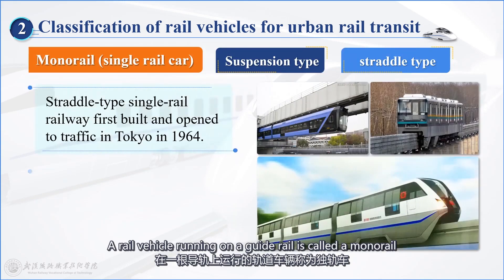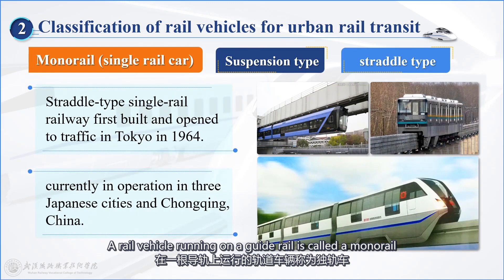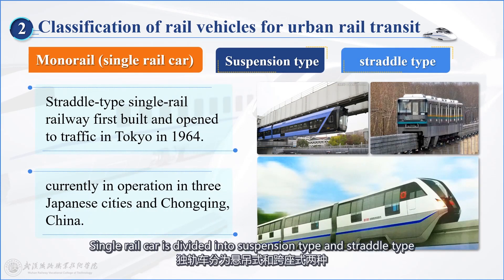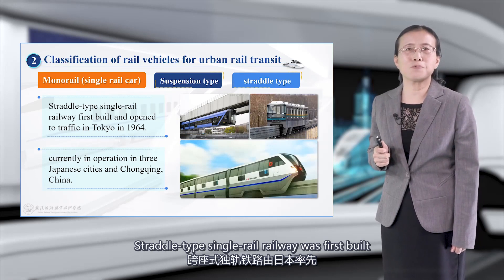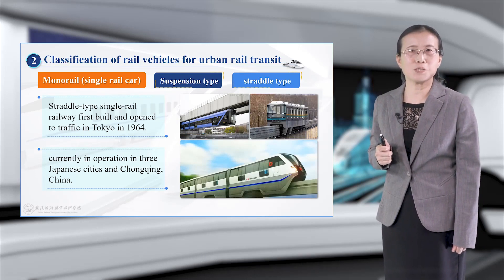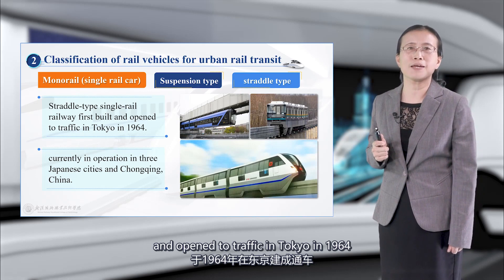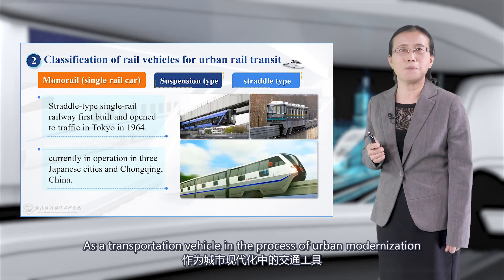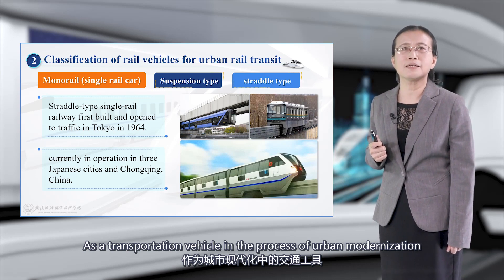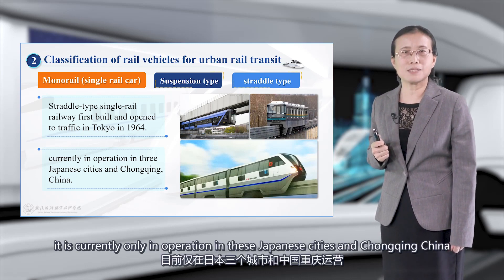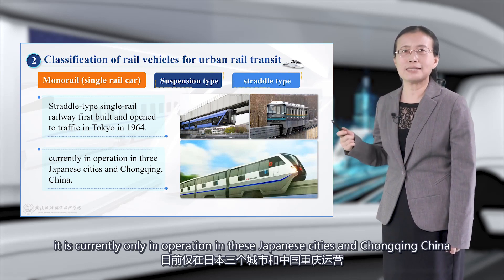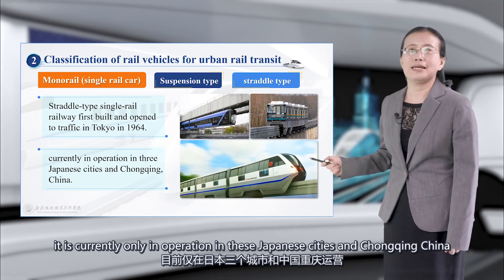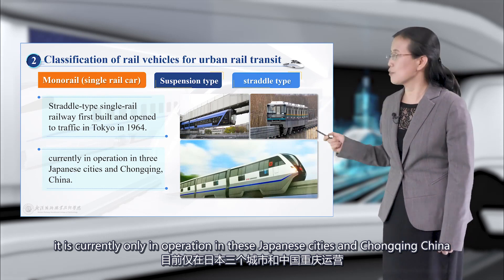A rail vehicle running on a guide rail is called a monorail. Single rail cars are divided into suspension type and straddle type. The straddle-type single-rail railway was first built and opened to traffic in Tokyo in 1964. As a transportation vehicle in the process of urban modernization, it is currently only in operation in certain Japanese cities and Chongqing, China.